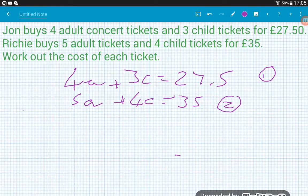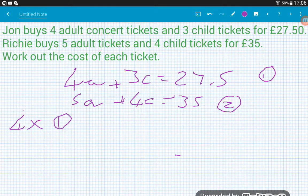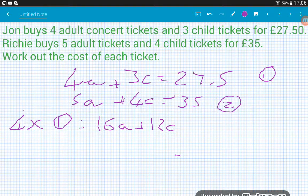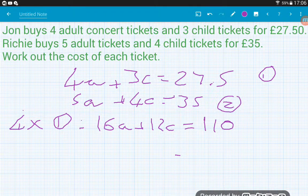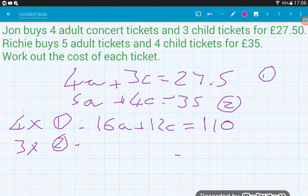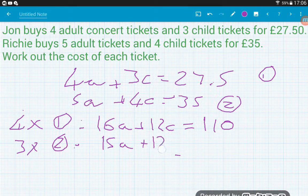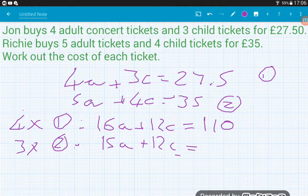So we can either alter each equation to get the same amount of adult tickets or child tickets. I would go for the child purely because three and four are smaller than four and five. Generally, it keeps things smaller if you go for the smaller multiples. So the first thing that three and four go into is 12. So we're going to want 12 child in each. So we're going to need to do four times equation one, and that's going to give us 16A add 12C and 4 times 27.5 is 110. And for Richie then, we're going to need to multiply it by three. So we're going to do three times equation two, and then that's going to give us 15A add 12C is equal to three times 35 is 105.